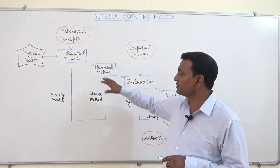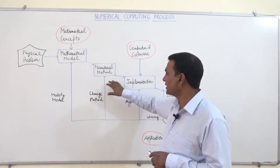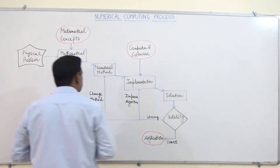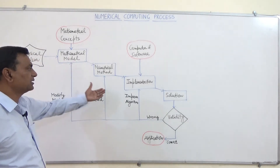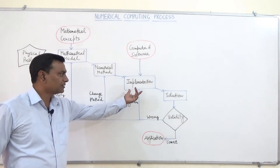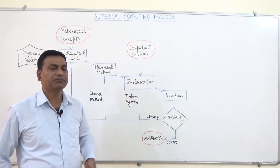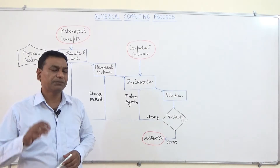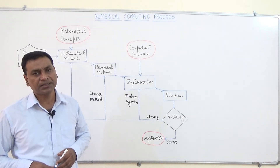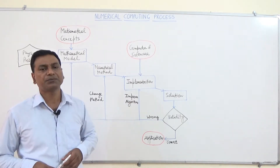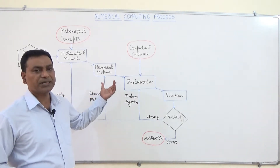This is the main difference between the mathematical model and the numerical method. After making the numerical method for a particular mathematical model, we come to the computer part — this is known as implementation. Implementation is nothing but the coding part; here we develop the program for this particular numerical method.